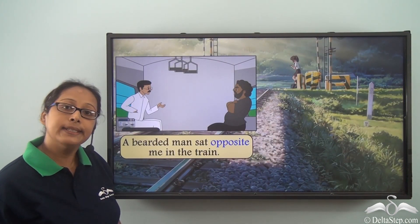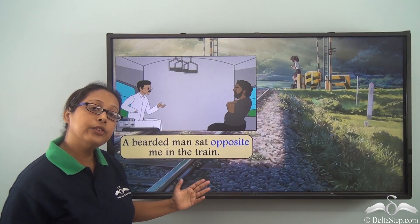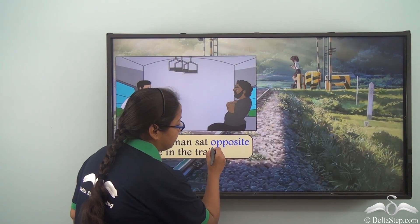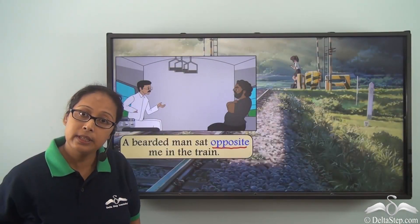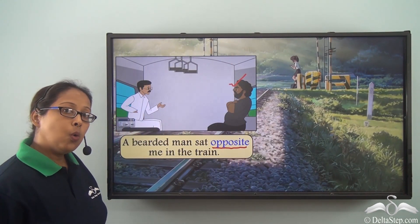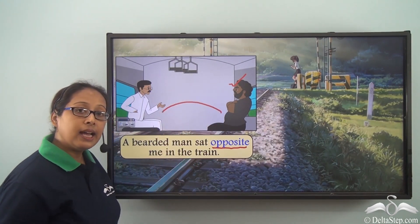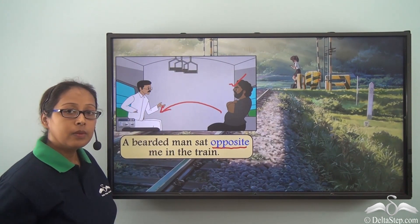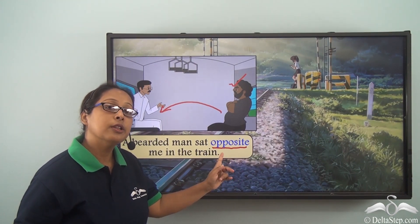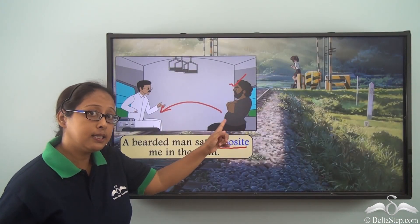Let's take a look at another sentence: A bearded man sat opposite me in the train. Which is the preposition in the sentence? It is opposite. Let's look at the picture. Here is the bearded man, and we can see that this bearded man is sitting on the other side of this man. So we will use the preposition opposite because he is sitting on the other side.